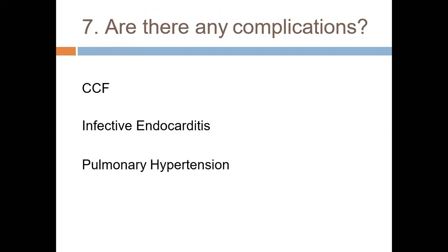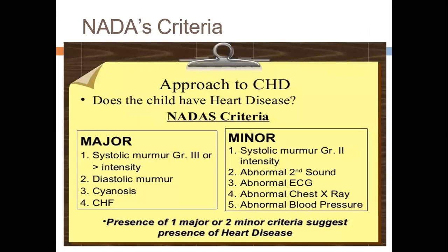Congenital heart disease may complicate in three ways: congestive heart failure, infective endocarditis (because valves are disfigured by the defect), or pulmonary hypertension. So patients present with either failure, infection, or pulmonary hypertension.